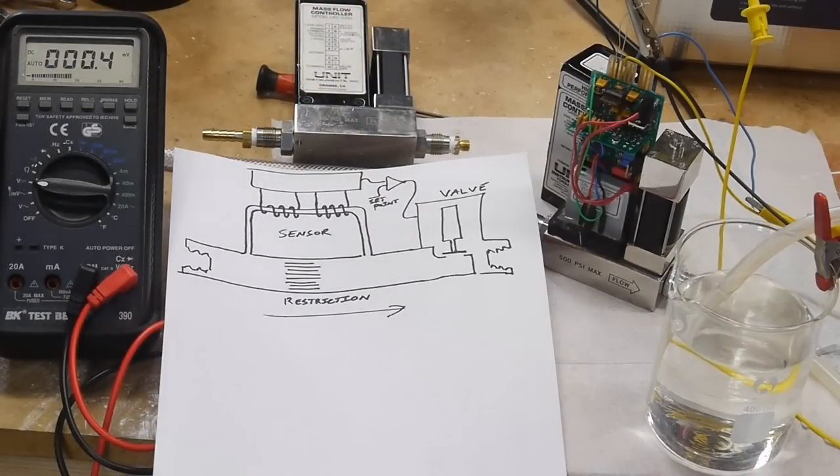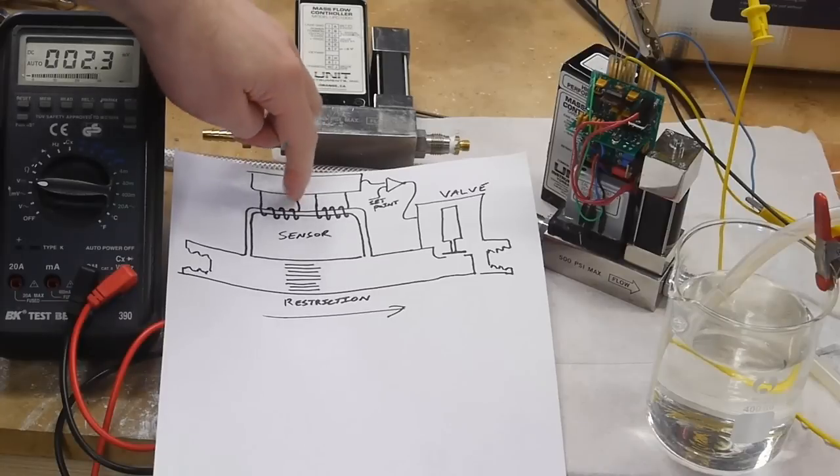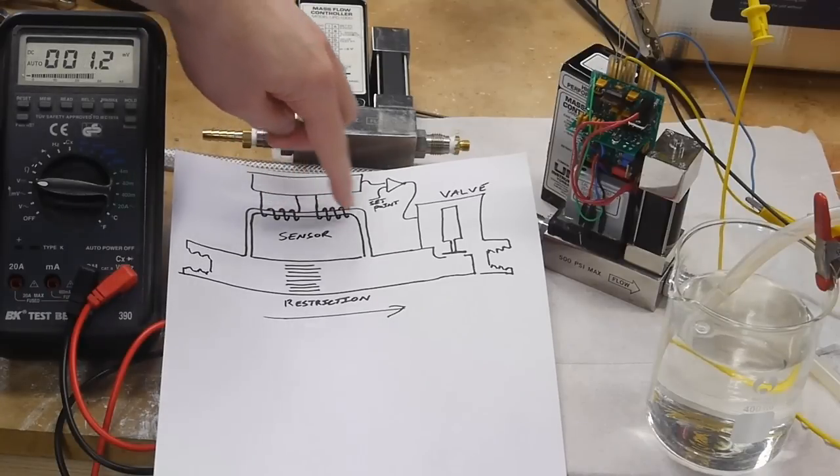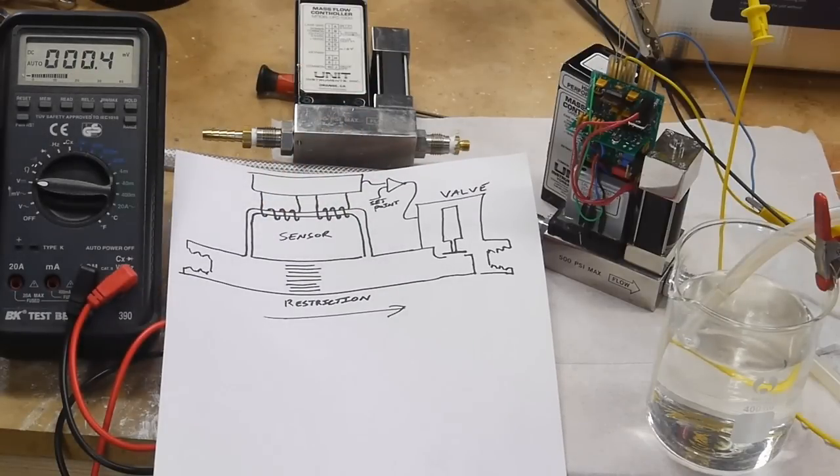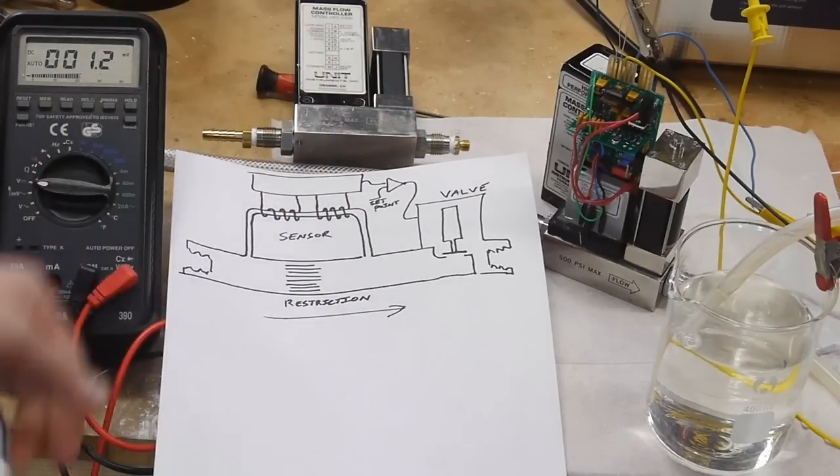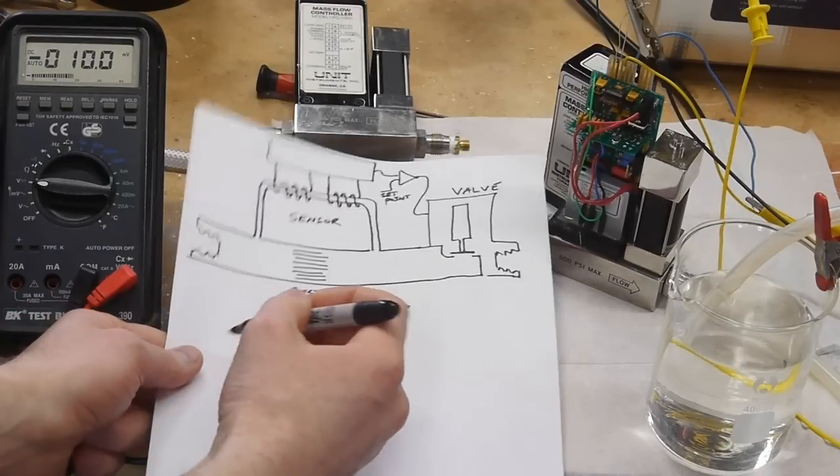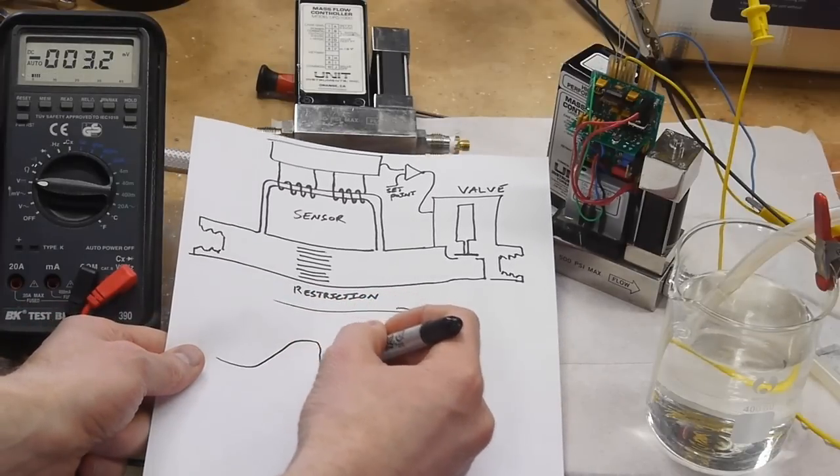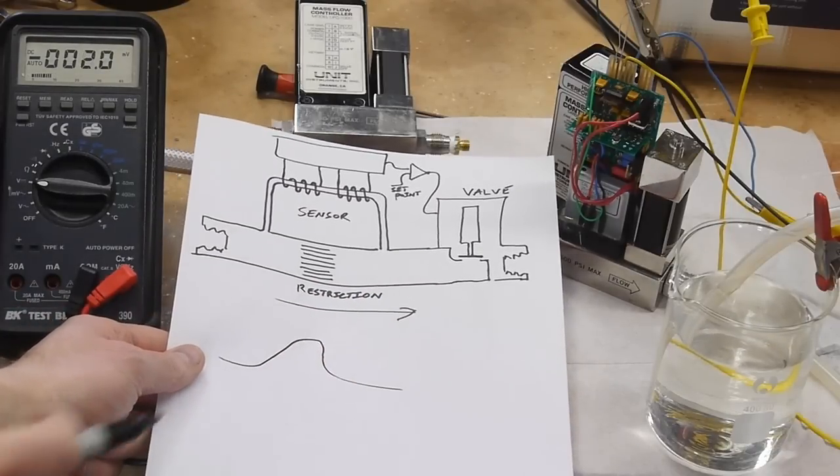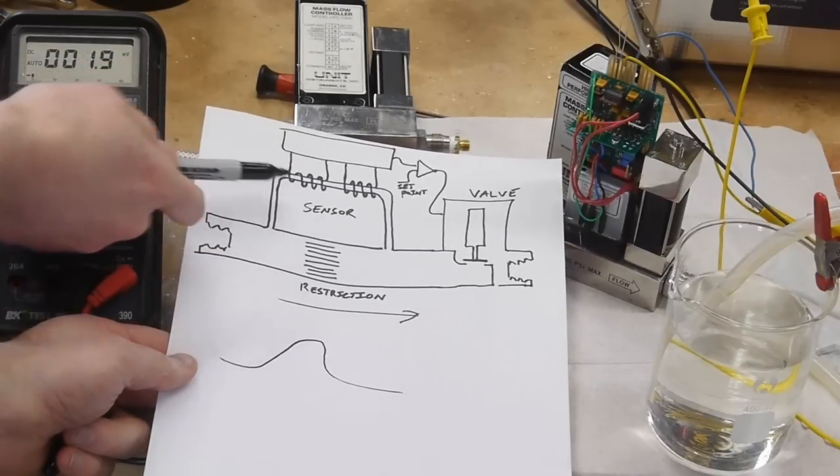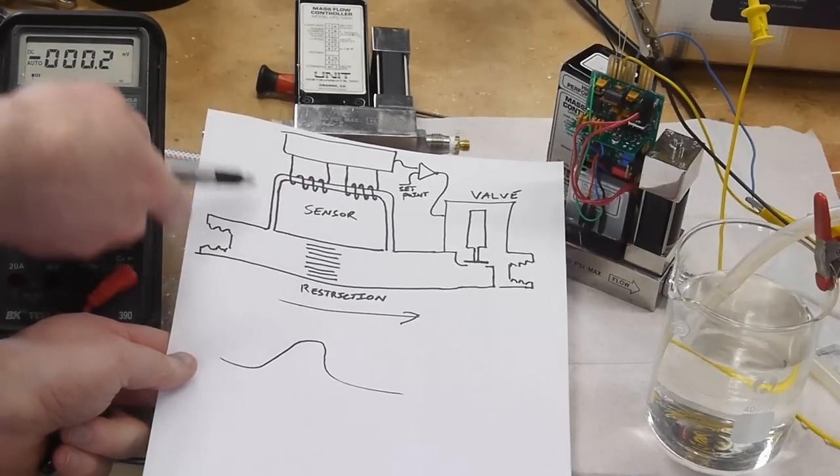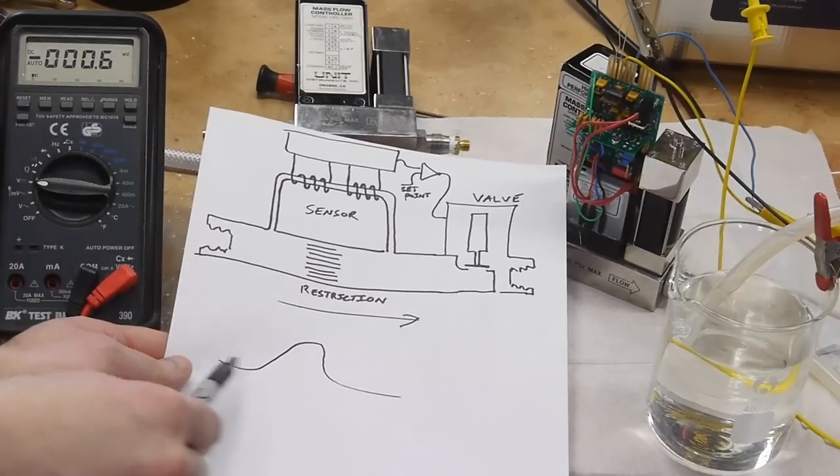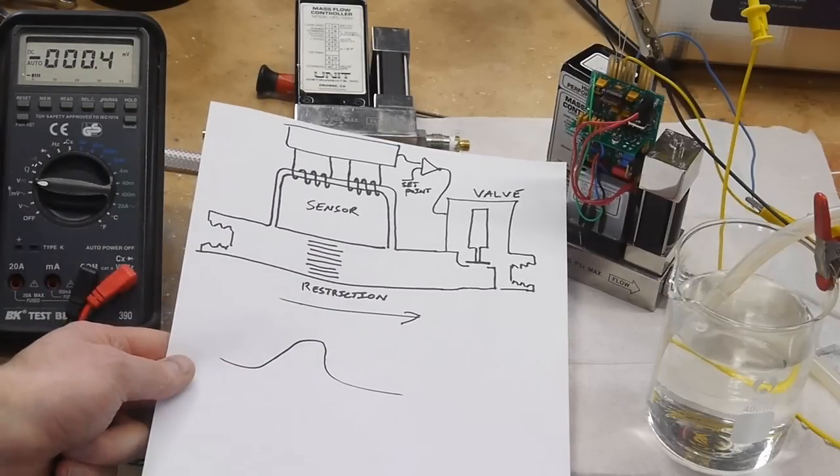So the way it actually measures gas flow is by applying a little bit of heat to this sensing tube here and normally if no gas were flowing through this sensor tube the thermal profile would look something like this. So the tube is hot here and it's not as hot at the ends because it's attached to the rest of the system so there would be this nice smooth Gaussian profile distribution.